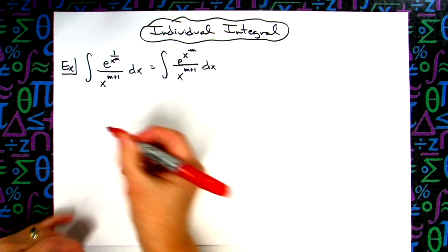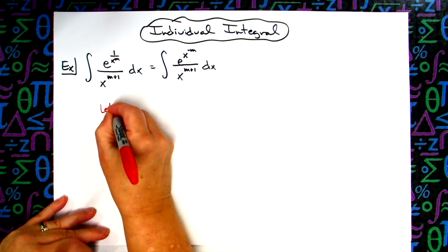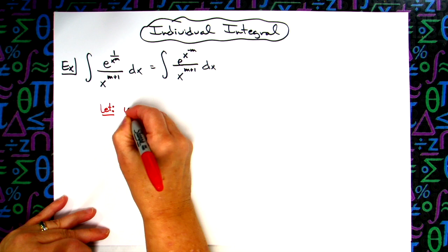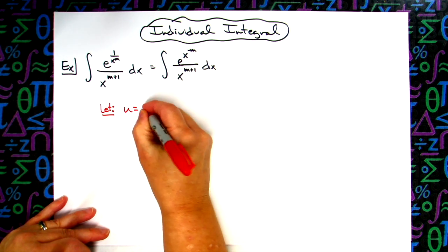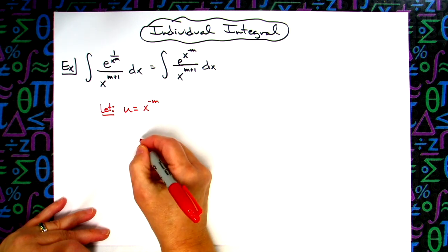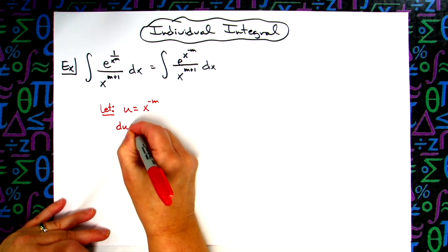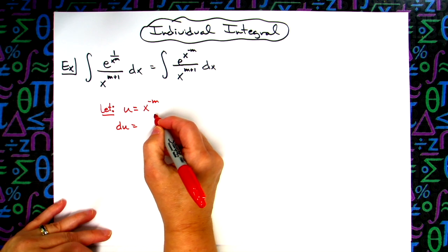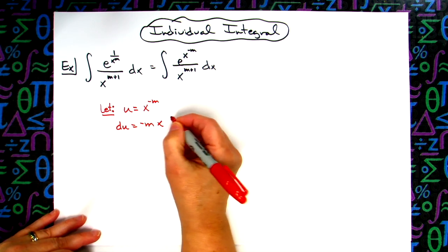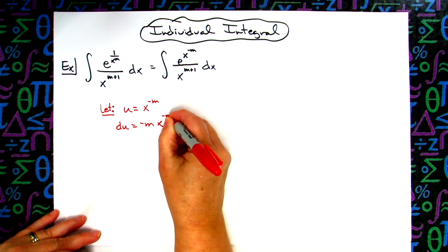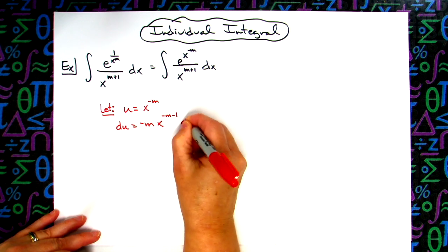Now I'm going to go to a straight u substitution. So we're going to let our u be this x raised to the negative m. From there we're going to take the derivative of both sides, so I'll have a du. This is just good old fashioned power rule, so I'll have a negative m in front, x raised to a negative m minus 1, and then dx.